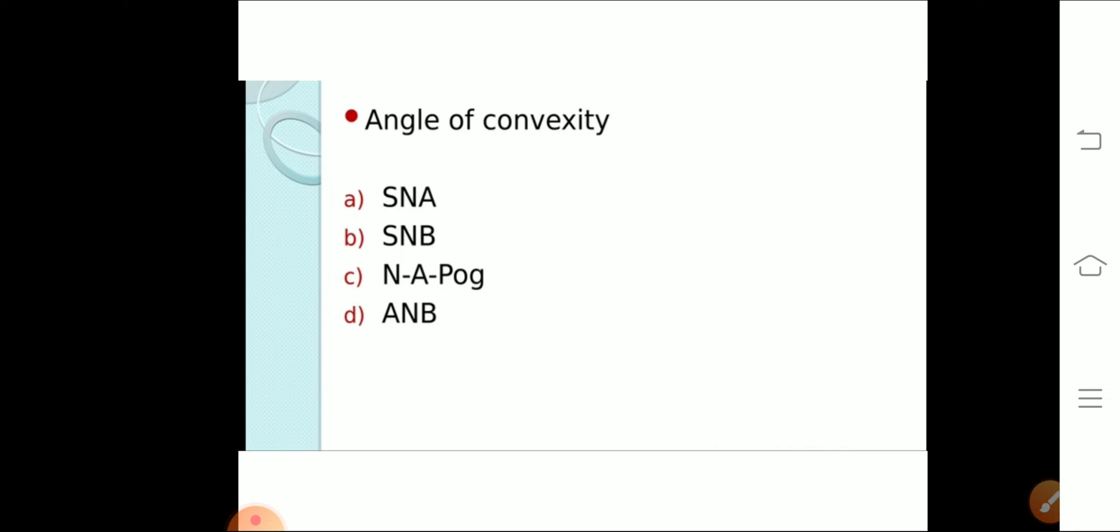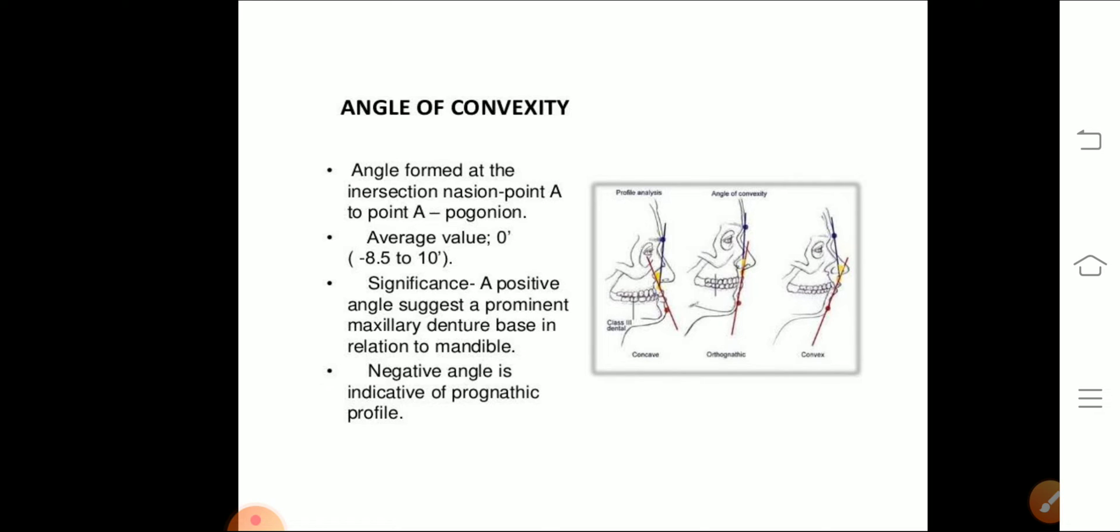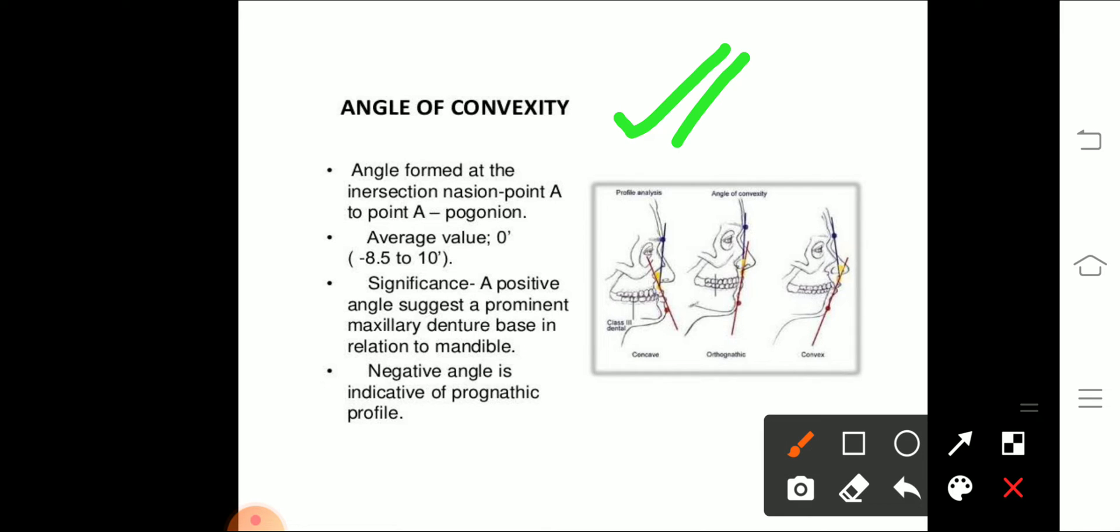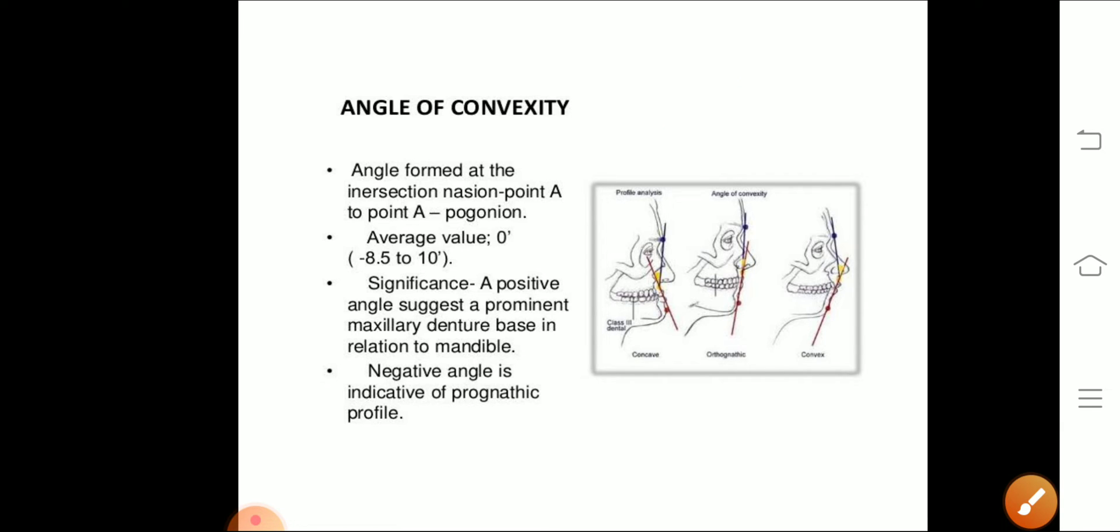Now the next question is what is angle of convexity? The first option is S and A, second is S and B, third is nasion to point A to pognion. Your third option is correct. The angle formed by the intersection of nasion to point A to pognion is known as angle of convexity. The average value is 0 degree. A positive angle suggests a prominent maxillary denture base in relation to mandibular. Negative angle is indicative of prognathic profile.